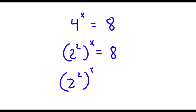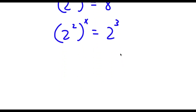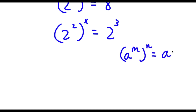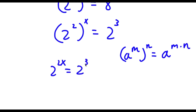So now I have 2 squared to the power of x is equal to 2 to the power of 3. Now if I have something in the form a to the power of m to the power of n, this is equal to a to the power of m times n. So 2 to the power of 2 to the power of x equals 2 to the power of 2x, which is equal to 2 to the power of 3.